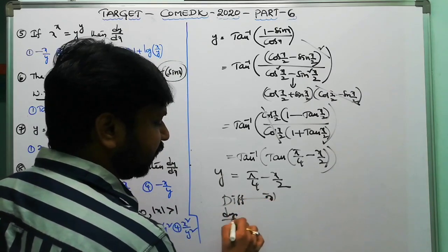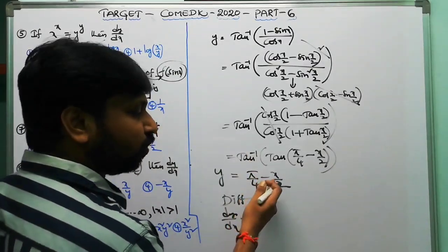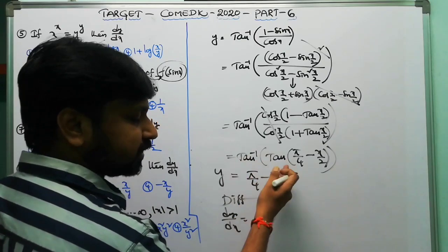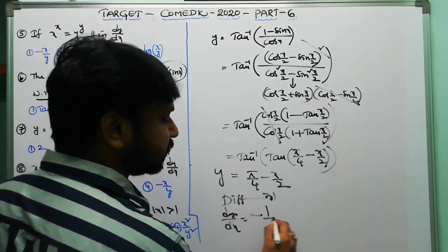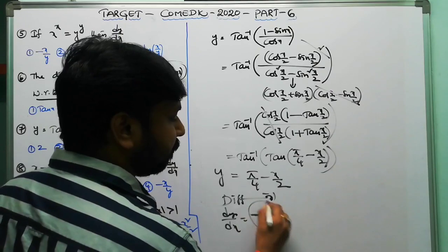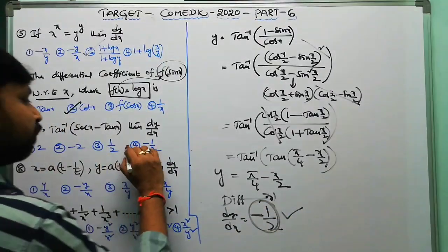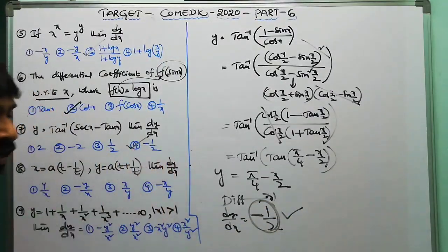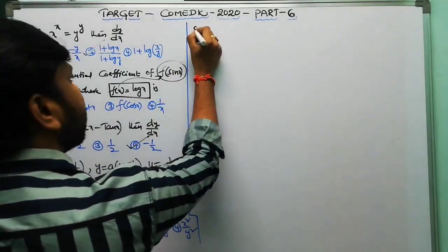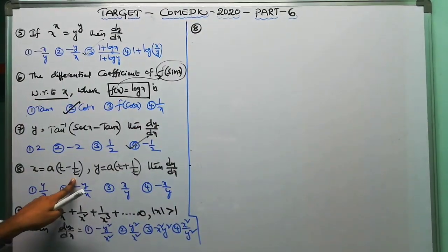Now differentiate y = π/4 − x/2 with respect to x. The derivative of π/4 is 0, and the derivative of x/2 is 1/2. So dy/dx equals −1/2. The fourth option is the correct answer.